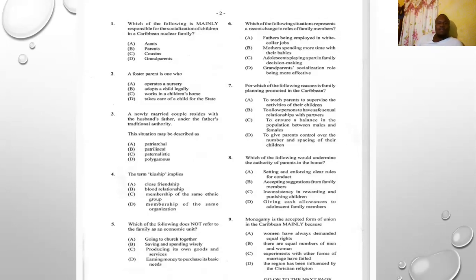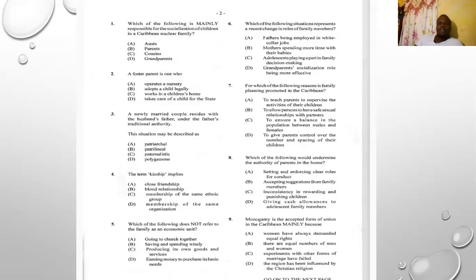Number one says: which of the following is mainly responsible for the socialization of children in the Caribbean nuclear family? Notice the key term — nuclear family. In a nuclear family there is the mother, the father, and the child or children. The options are A) aunts, B) parents, C) cousins, D) grandparents. The answer is B) parents, because the nuclear family is not extended — no aunts, grandparents, or cousins — so that eliminates three and leaves you with parents.